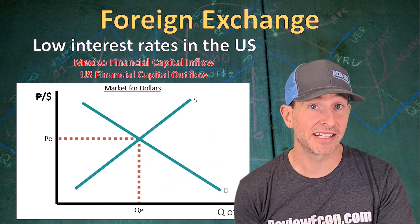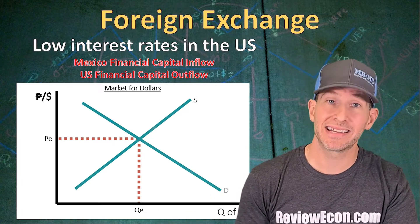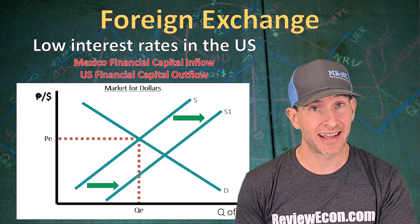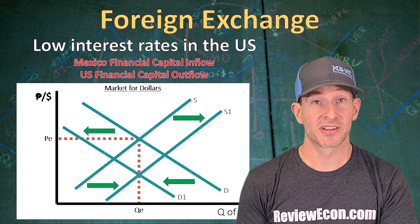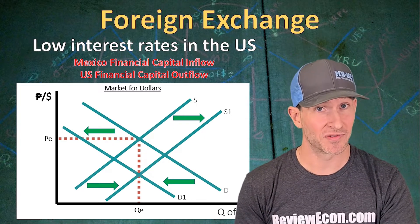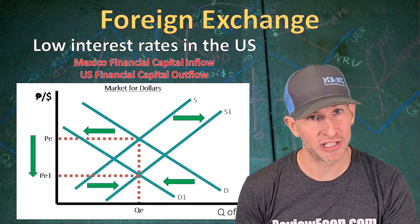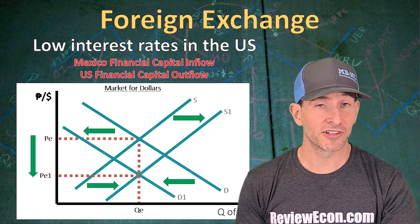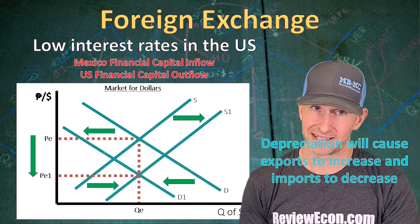Since foreign investors are going to be selling US assets to buy foreign assets, we will see an increase in the supply of US dollars. At the same time, we will see a decrease in the demand for US dollars because foreign investors will be less likely to buy US assets due to the lower interest rate. Both of those shifts cause the currency to depreciate as the exchange rate falls on the Y-axis. That depreciation will cause exports to increase and imports to decrease.